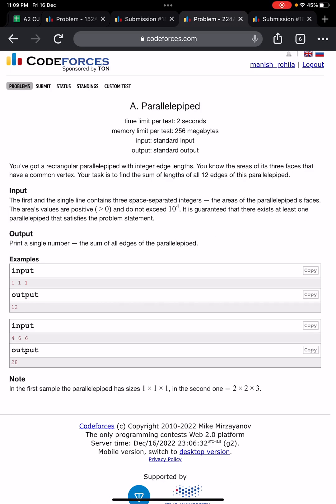Hello everyone, welcome to Developers and Coders Club of ANIT Agartala. This is another problem we are going to solve named Parallelepiped. You have got a rectangular parallelepiped with integer edge lengths. You know the areas of its faces that have a common vertex. Your task is to find the sum of lengths of all 12 edges.